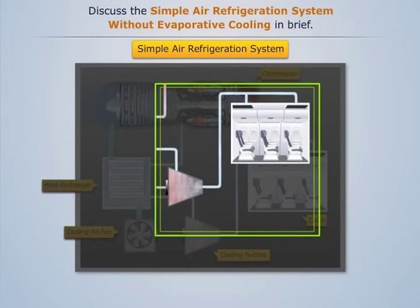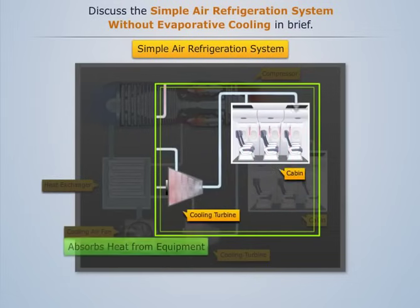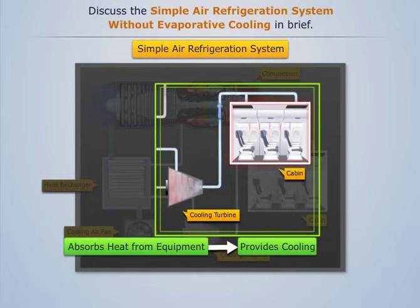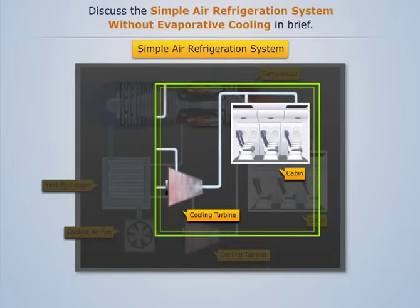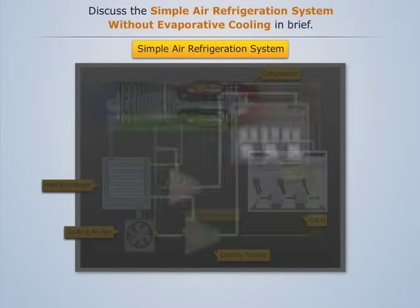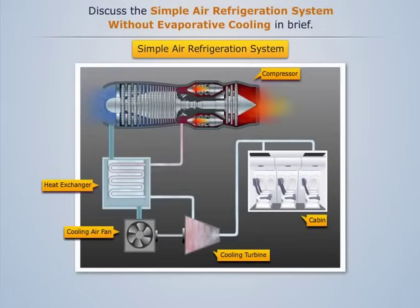This cool air is then sent to the cabin and cockpit, where it absorbs heat from the equipment and occupants, thereby providing cooling. Ideally, this process is considered isobaric in nature. This heated air is then exhausted into the atmosphere, thereby completing the cycle.